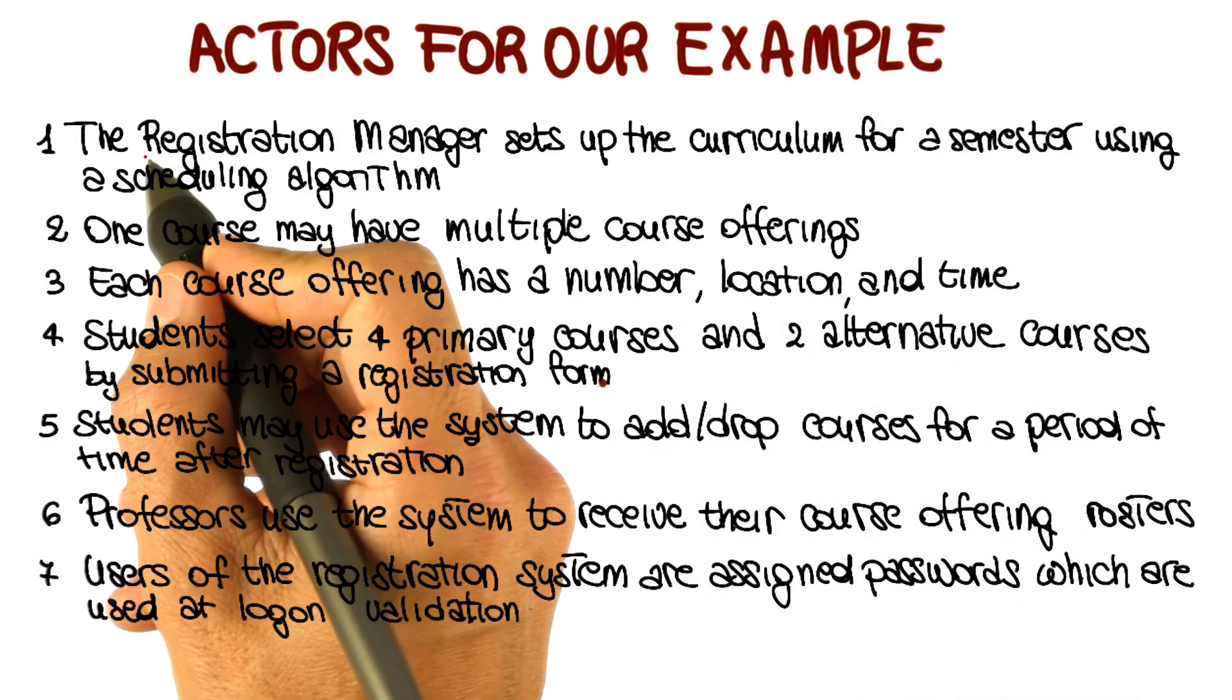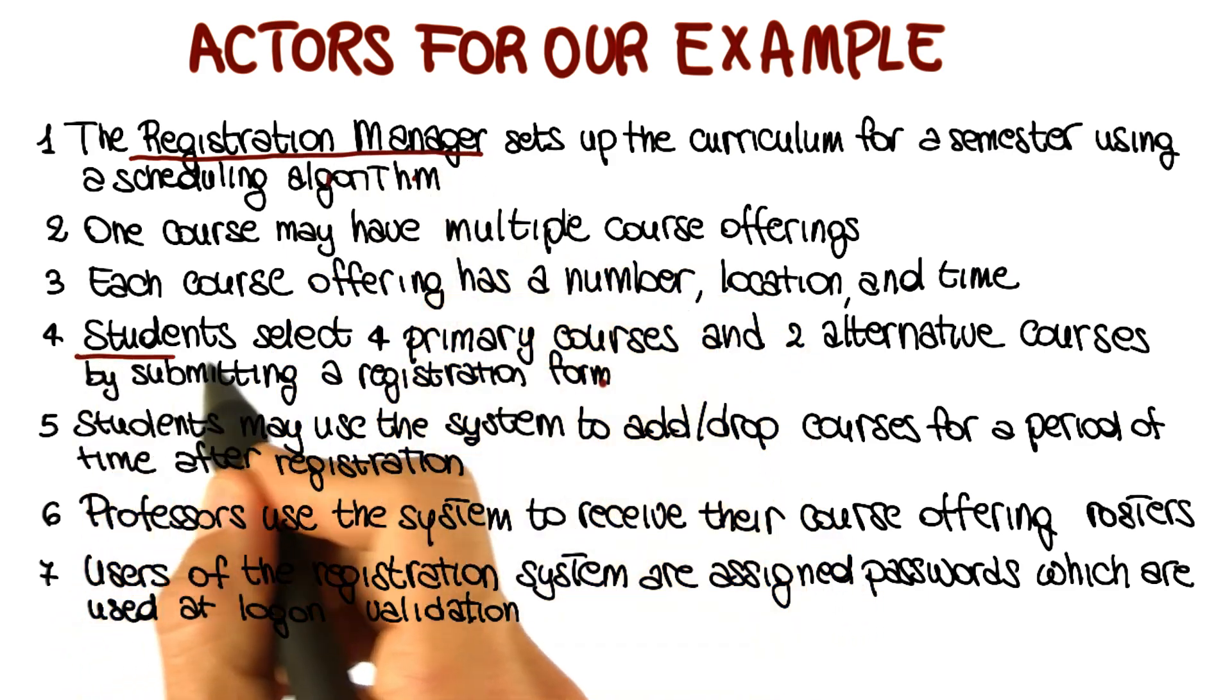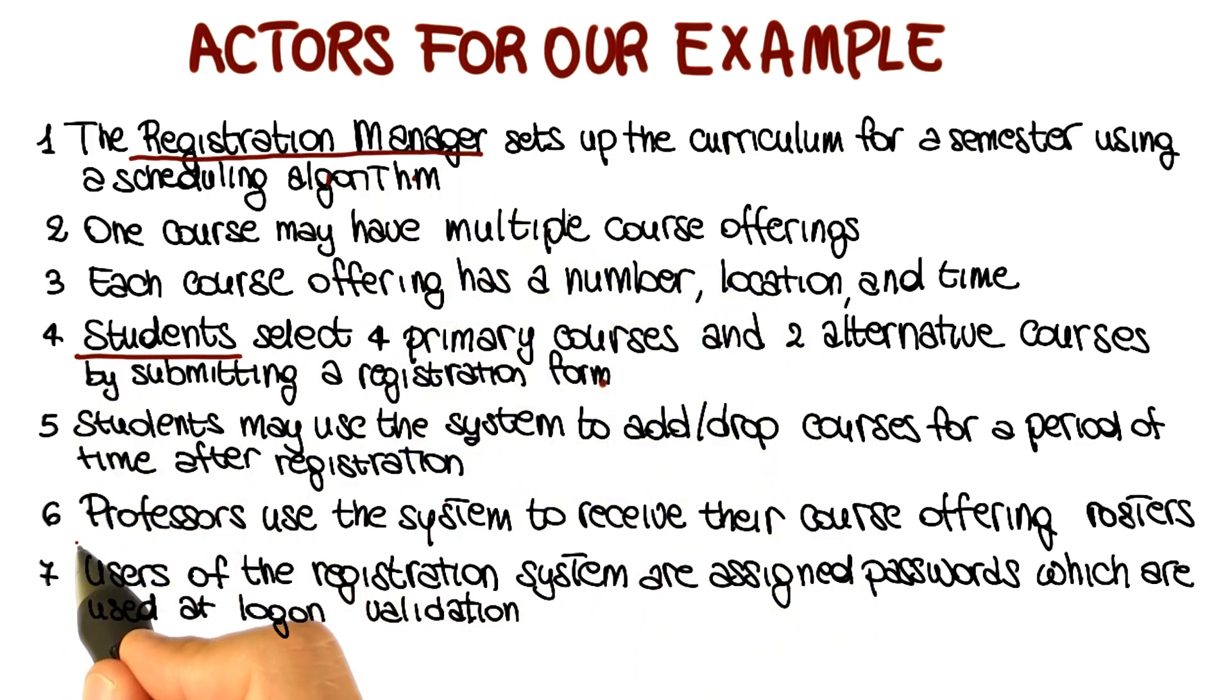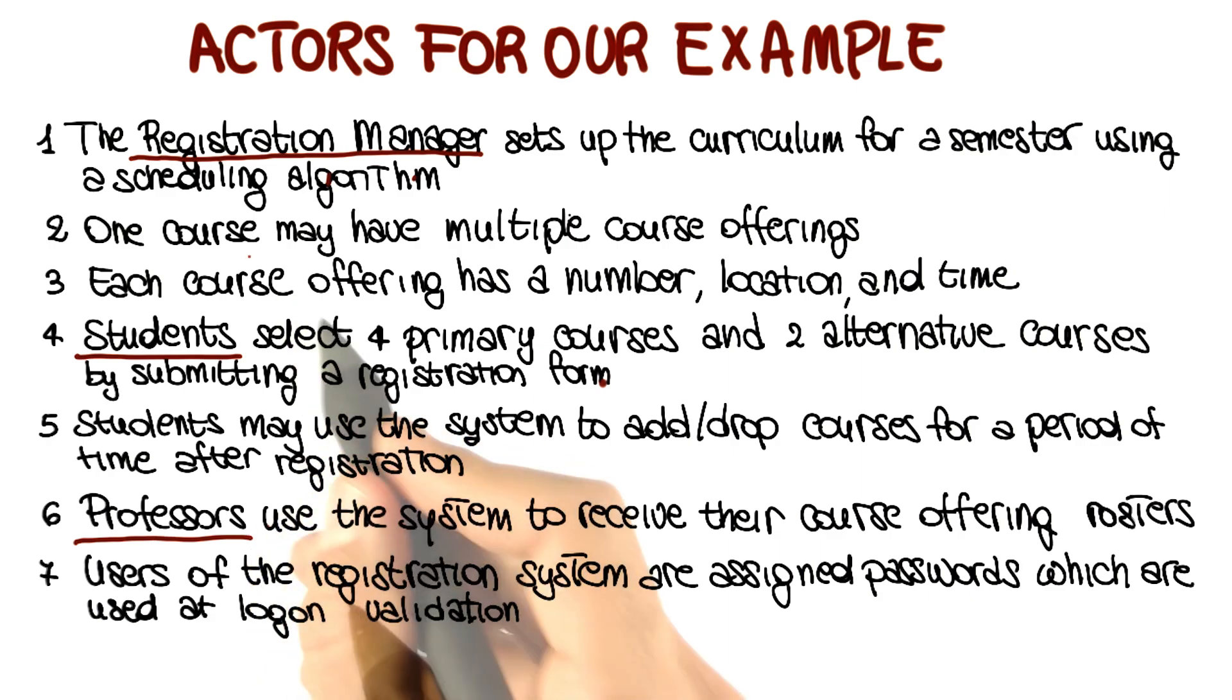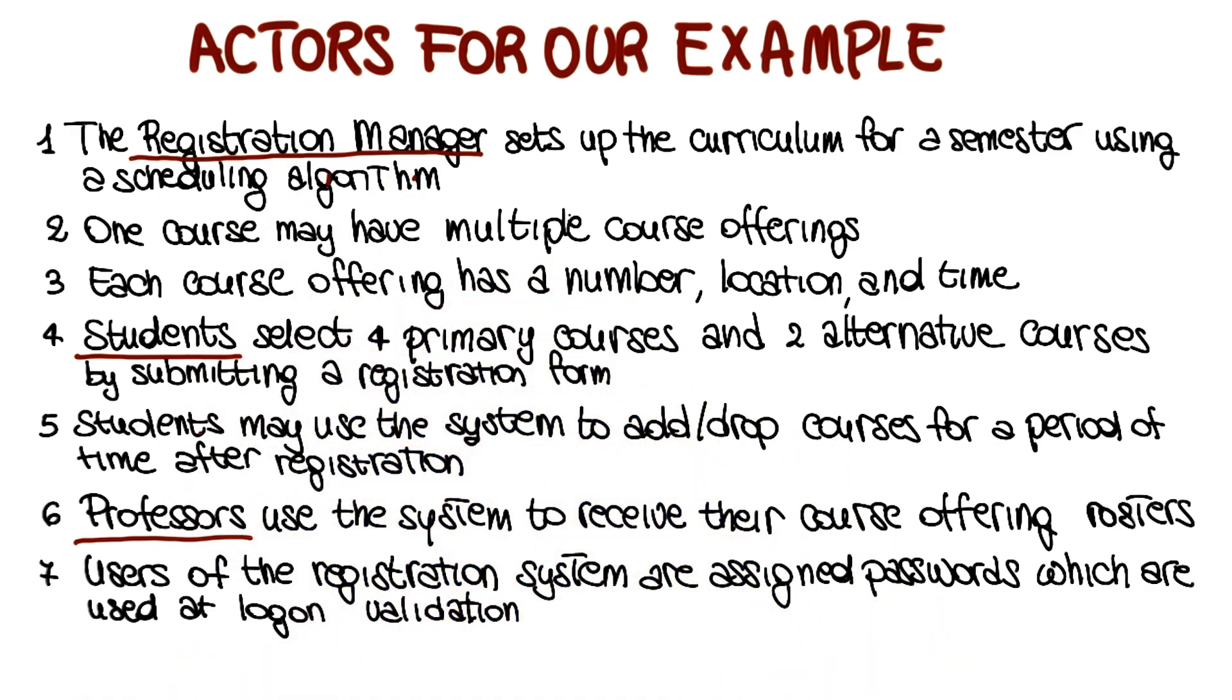If we look at the description, we can see that for example, the registration manager is clearly an actor for the system. Students are actors for the system. Professors are actors for the system. And notice that we're not doing the same thing that we were doing when identifying classes. Here we are identifying entities that are from the outside world and have an active role in interacting with my system.